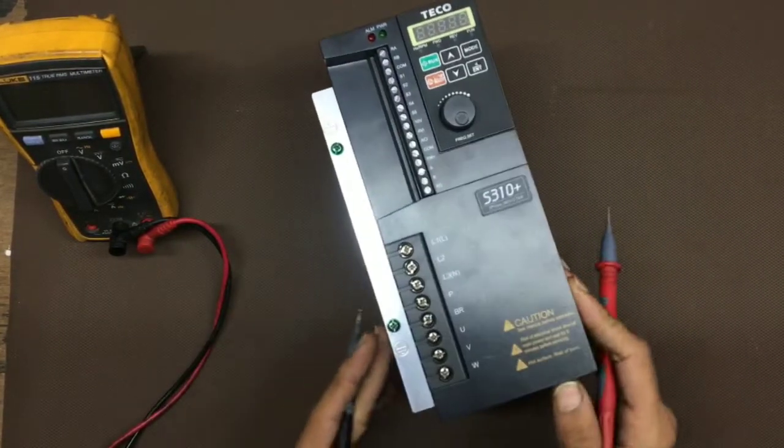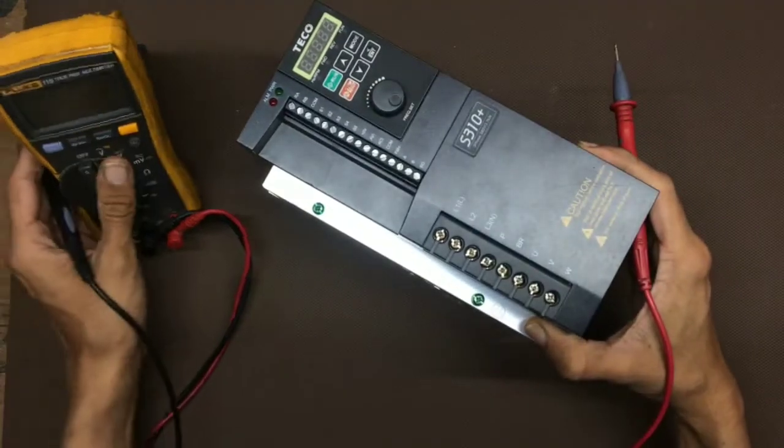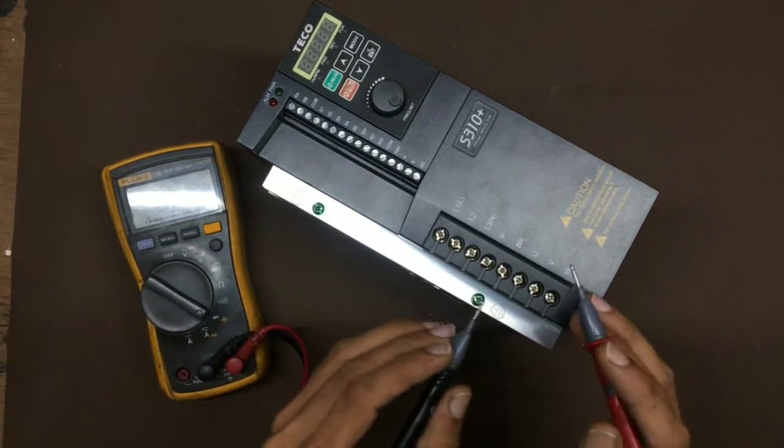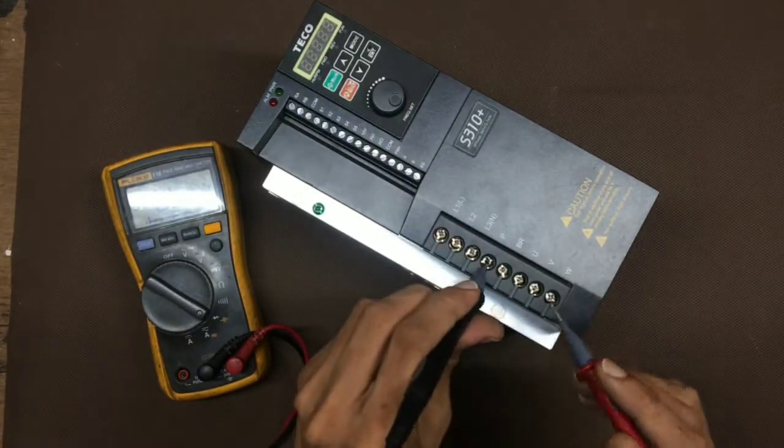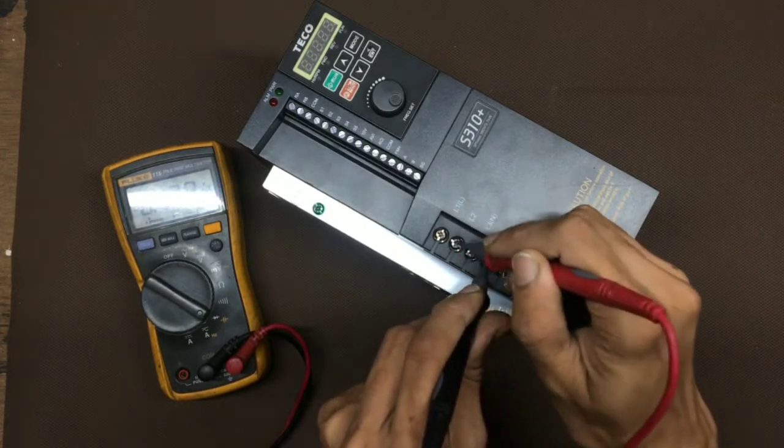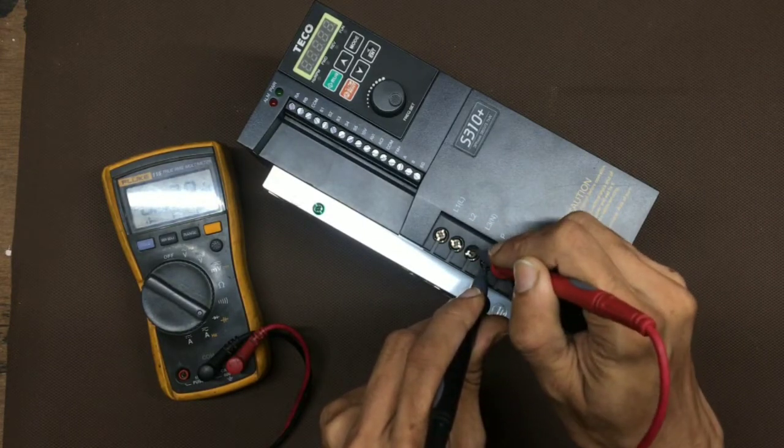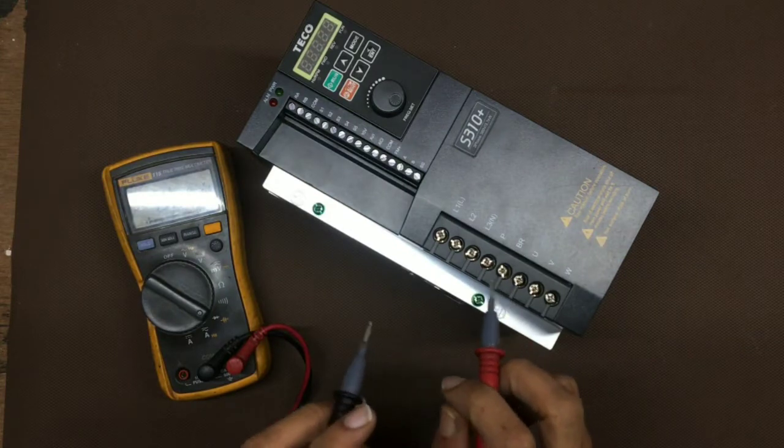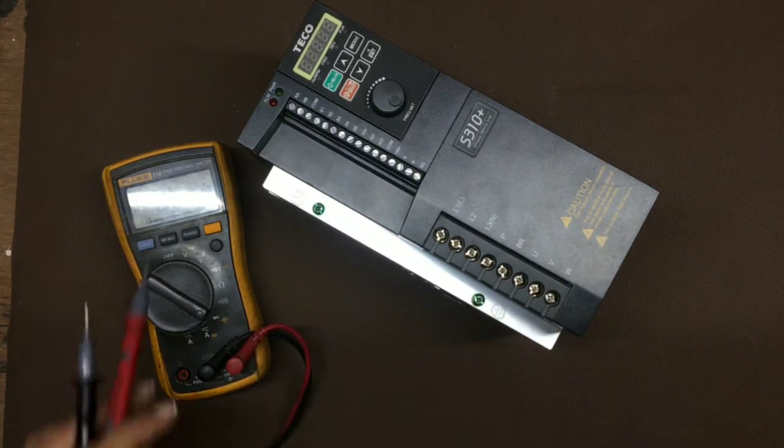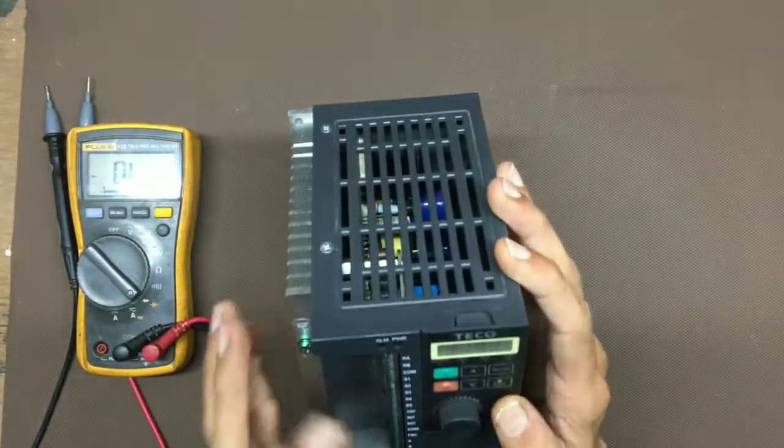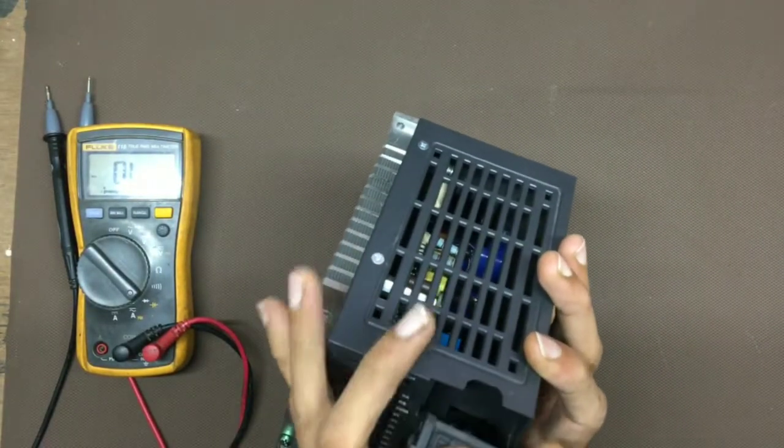So first of all, we have to check the rectifier and IGBT. This is the positive terminal with respect to that UVW. No shorting. We don't have a negative terminal, so we can check with that. Now we will have to open the drive. So this is the lock. Push there and open.